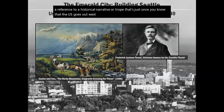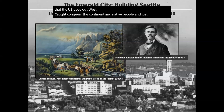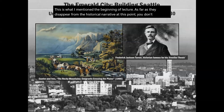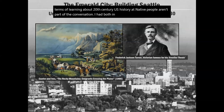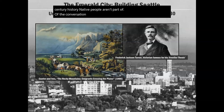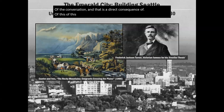The myth of the disappearing Indian is a historical narrative or trope: once the U.S. went west, conquered the continent, and eliminated Native people, they were now just gone. This is what I mentioned at the beginning of the lecture — Native people disappear from the historical narrative at this point. In terms of learning about 20th-century U.S. history, in secondary school or in popular history, Native people aren't part of the conversation. That is a direct consequence of this disappearing Indian trope.